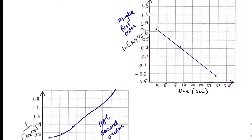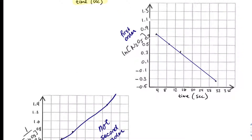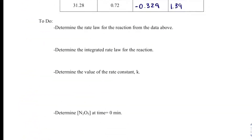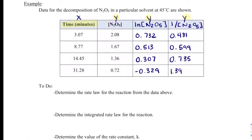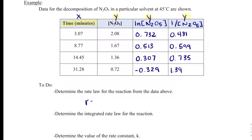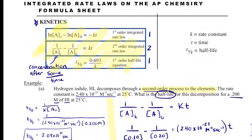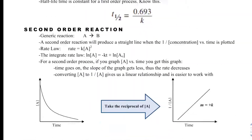Since I got a linear relationship for ln(N₂O₅) versus time, this is indeed first order. So when asked to determine the rate law from the data, it is first order: rate = k[N₂O₅]¹. To write the integrated rate law, I look at my formula sheet for first order and just replace A with N₂O₅: ln[N₂O₅]_t − ln[N₂O₅]₀ = −kt.